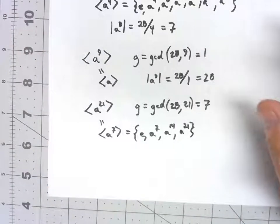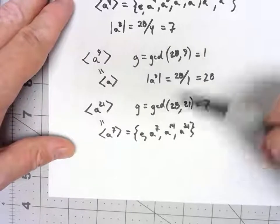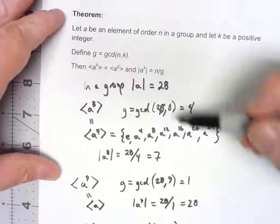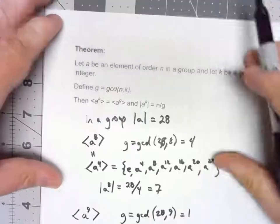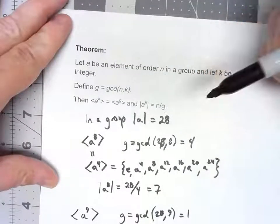Again, there are a few really important consequences to this theorem. Probably the most important one is that because of this division here, because the order of a^k is n over g...